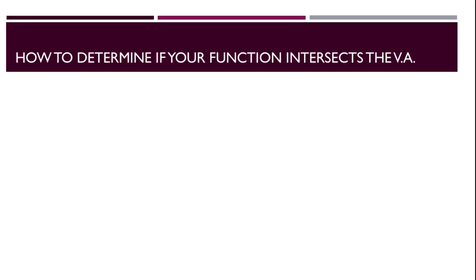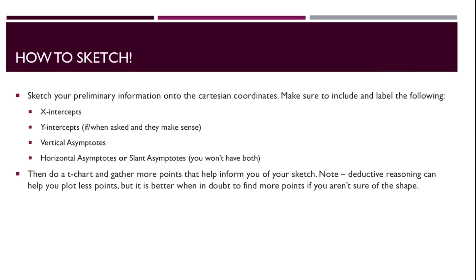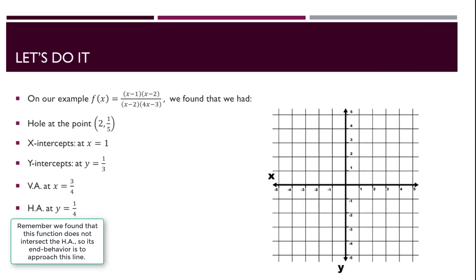A common question is whether our function will intersect the vertical asymptote. The answer is no — it never will. A vertical asymptote is a point where plugging in x gives division by 0, and this division by 0 does not reduce out. We've already accounted for holes, so you cannot plug in an x value that results in division by 0. Now we're finally ready to start sketching our function. We'll put all our preliminary information down first, and then do a t-chart to gather more points strategically to inform our sketch.